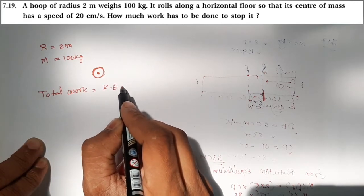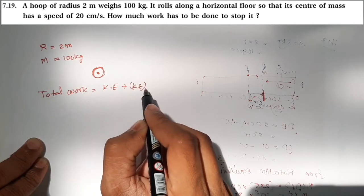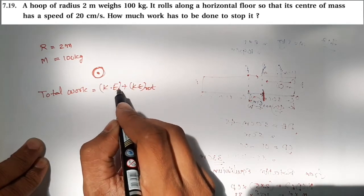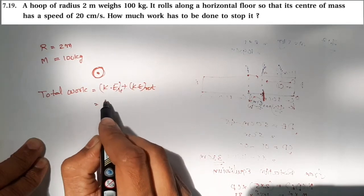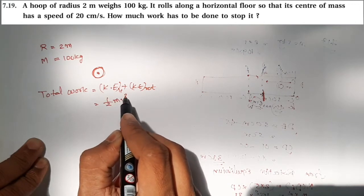This is one half mv squared for linear motion plus one half I omega squared for rotational motion.